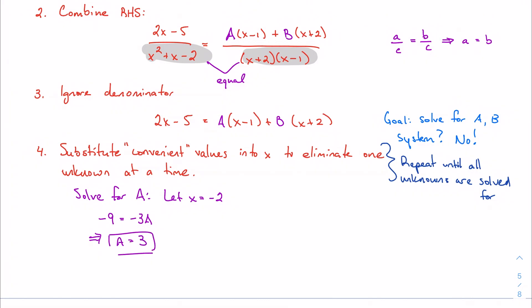And then we're going to repeat this process for B. If I want to eliminate A to solve for B, I need to let x equal 1. And that's going to give me 0A, which eliminates A. So, if I plug in 1 everywhere, I get negative 2. Did I do that right? No. 2 times 1 is 2, minus 5 is negative 3, equals 3B. B equals negative 1.